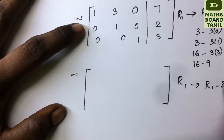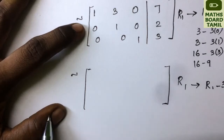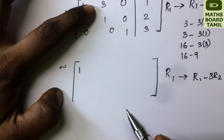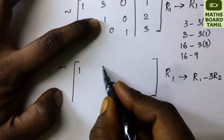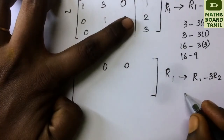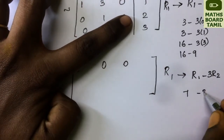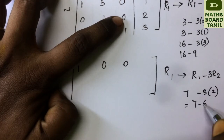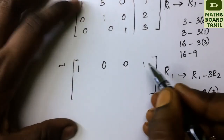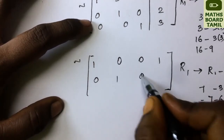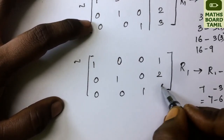Performing row operations: 1−1=0, 3−3=0, 3−3=0. We get 0 in those positions. Then 7−3=4, 7−6=1, yielding 0 again. We now have the reduced form: 1, 0, −2 | 0, 1, −3.